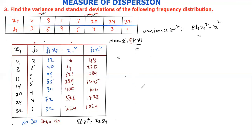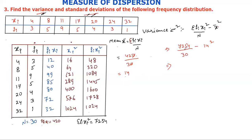Now we find the variance. The mean x̄ = 420/30 = 14. Substituting into the formula: variance σ² = 7254/30 − 14² = 241.8 − 196 ≈ 45.6. So the variance is approximately 45.6.